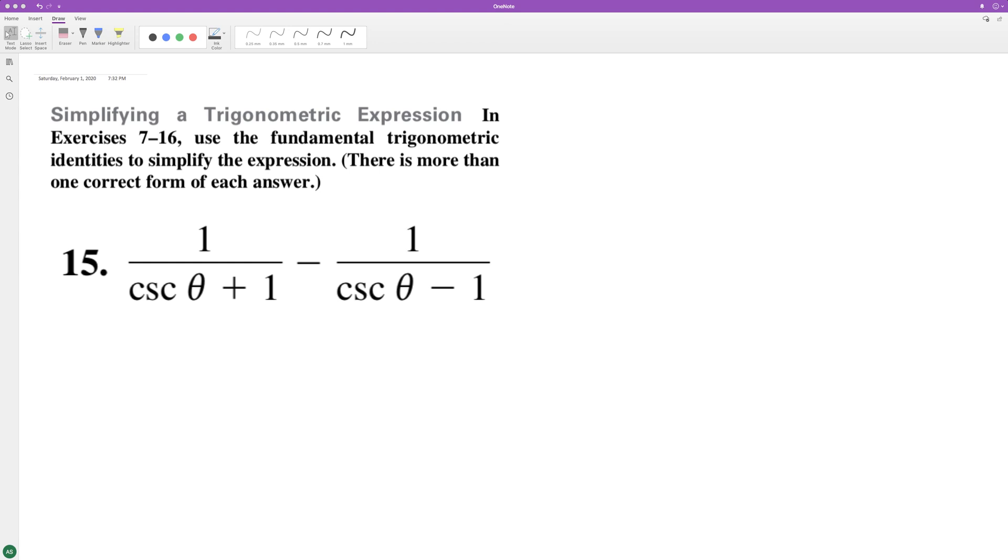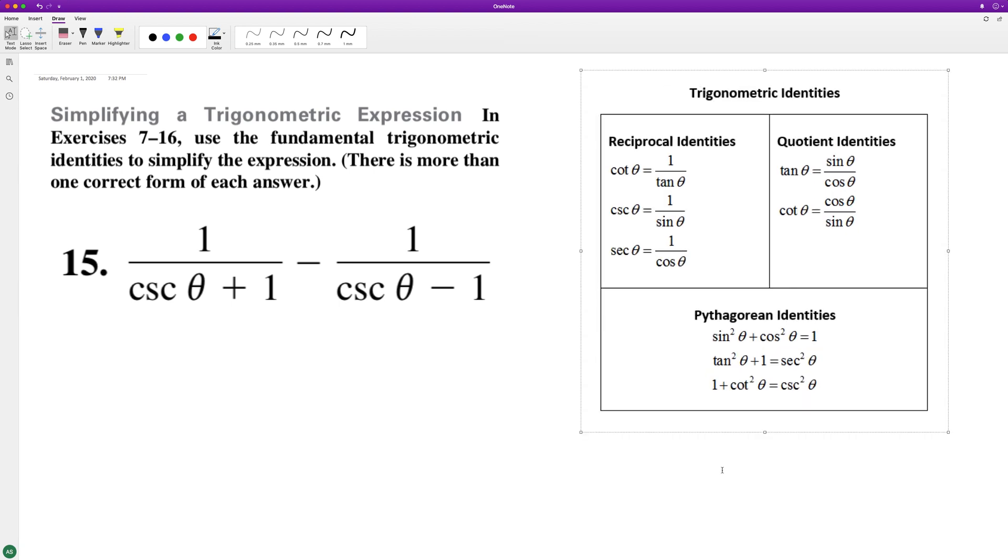What we'll do here is get a common denominator, which is going to be cosecant squared theta minus one. So we'll end up with cosecant theta minus one.